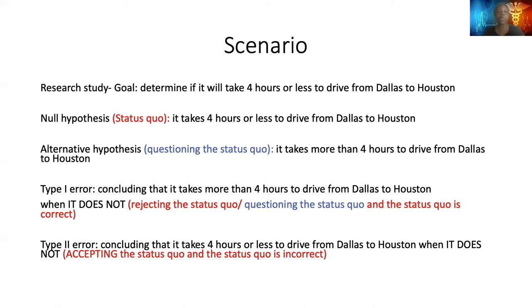A type two error in this scenario would be concluding that it takes four hours or less — agreeing with what society says, the status quo — and it actually turns out that the status quo is incorrect. Maybe they did the testing and it took four hours and 30 minutes to get to Houston. You believed what they said, but the testing showed it actually did take longer. That is a type two error.